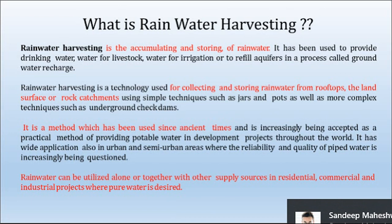Rainwater harvesting is a method which has been used since ancient times and is increasingly being accepted as a practical method of providing potable water in development projects throughout the world. It has wide application in urban and semi-urban areas where the reliability and quality of piped water is increasingly being questioned. Rainwater can be utilized alone or together with other supply sources in residential, commercial and industrial projects where pure water is desired.